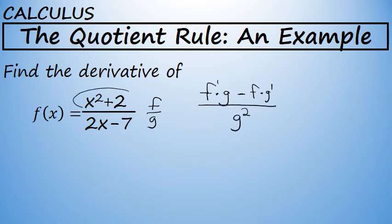In this case, our numerator is x squared plus 2, our denominator is 2x minus 7. We will use the quotient rule to find this derivative.